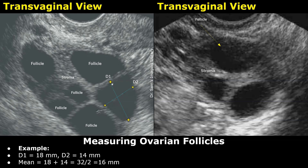First we place one set of calipers on the maximal dimension at the inner walls of the follicle, and the second set of calipers must be placed perpendicular to the first set. The longer measurement is diameter 1, or D1, and the second measurement is D2. D1 measures 18 millimeters and D2 measures 14 millimeters. The mean diameter is (18 + 14) / 2 = 32 / 2 = 16 millimeters.